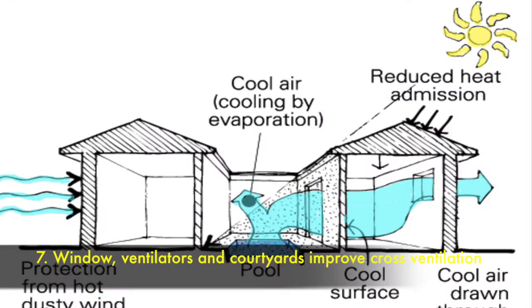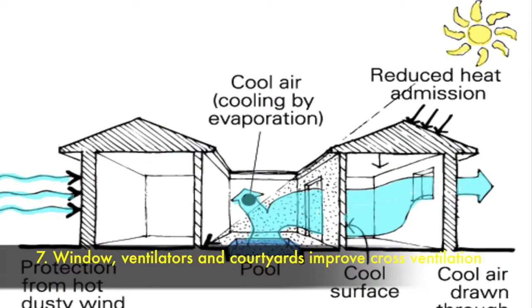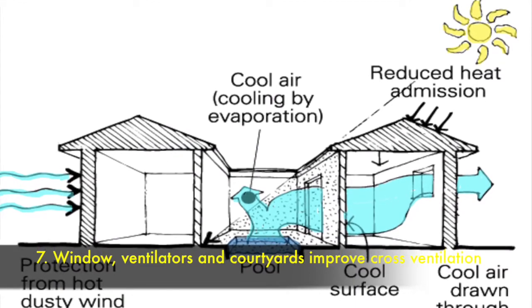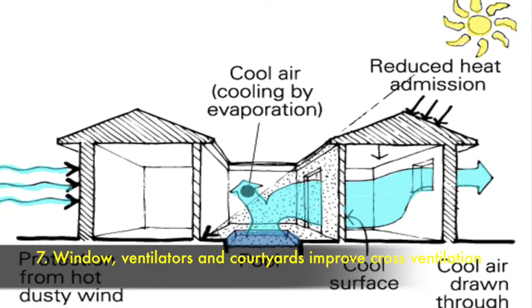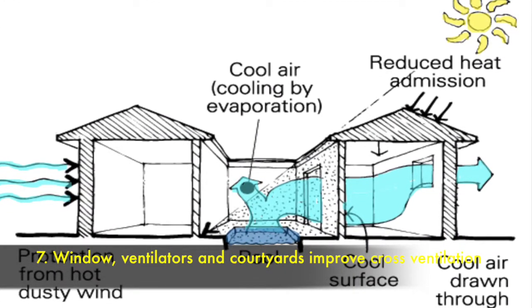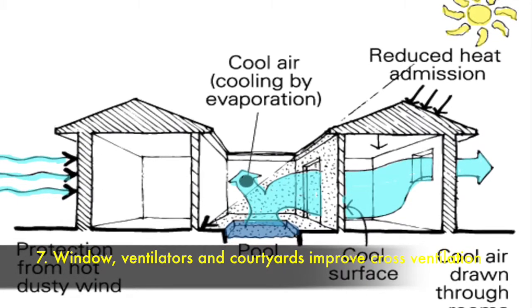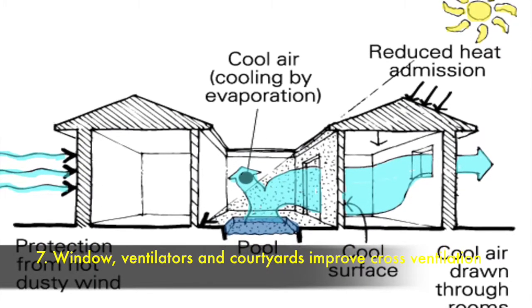The sixth one is provide deep recess windows for protecting from direct sun. The seventh one is properly designed windows and ventilators and interconnected courtyards help in good cross ventilation.